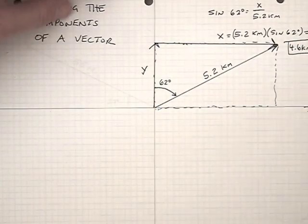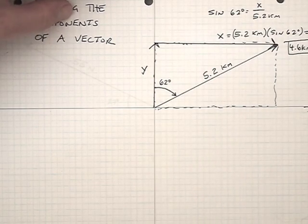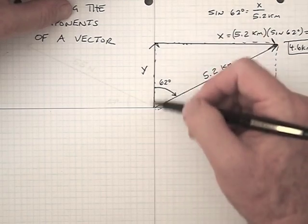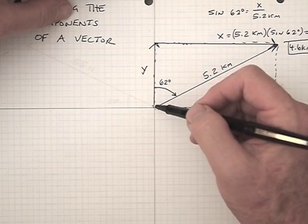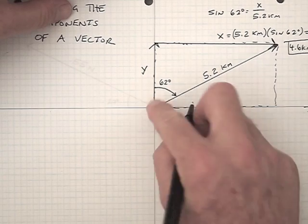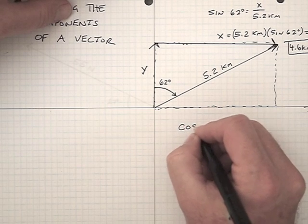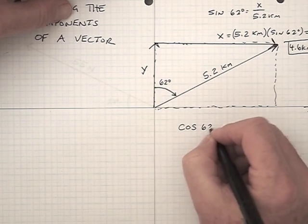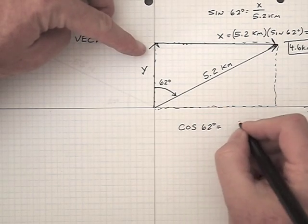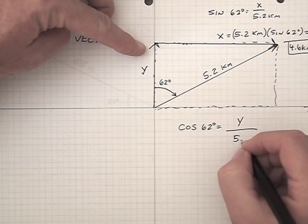Over here, if we want to find the y component of this 5.2 kilometer vector, you can see that this y component corresponds to the adjacent side of this triangle. So the adjacent over the hypotenuse is going to be the cosine. So I can say that the cosine of 62 degrees is going to be equal to the adjacent side y over the hypotenuse, which is 5.2 kilometers.